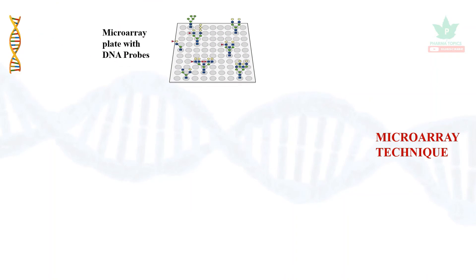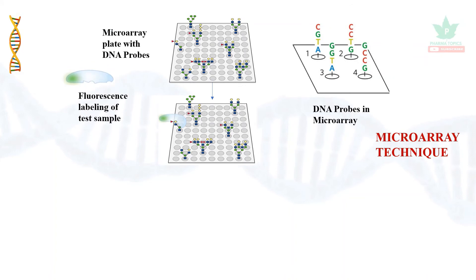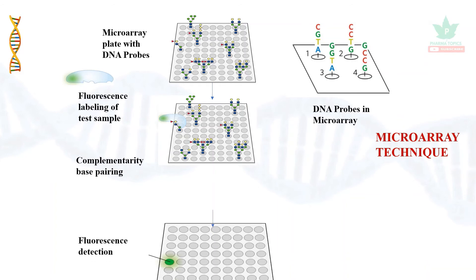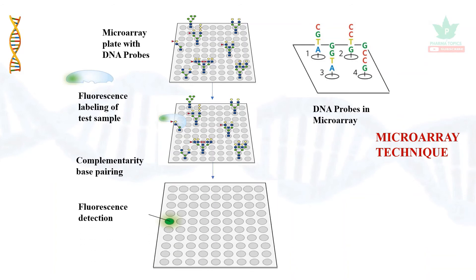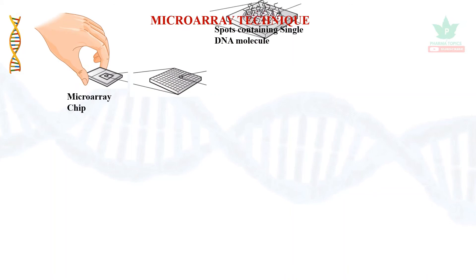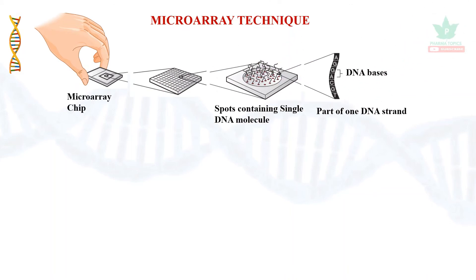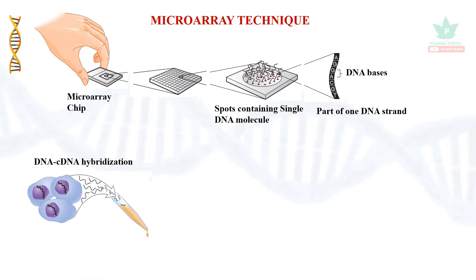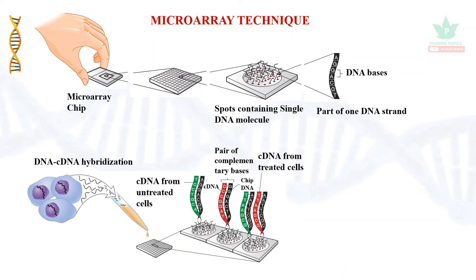The microarray chip contains probes, which are sequences of DNA. The test sample is tagged and undergoes complementary base pairing with the probes. Fluorescence is then detected. In this microarray chip, two types of cells — tumor cells and normal cells — are used. The cDNA from each binds to the chip sequences, and a fluorescence tag reveals which sequences bind.